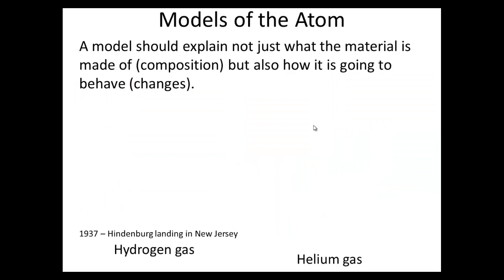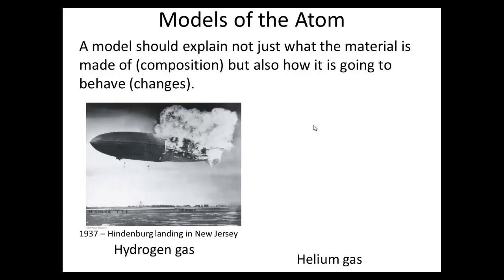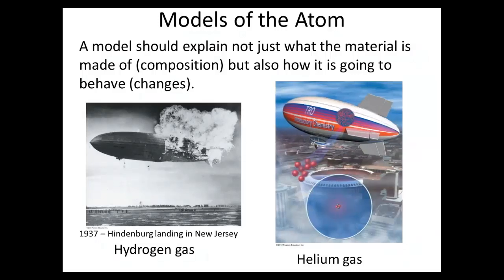So, now that we have the valence electrons out of the way, and you have a general understanding of it, I want you to kind of get an idea of what models of the atoms are. And we use models to explain not just what the material is made of, but also how it is going to behave, how it's going to change, basically how to predict how things are going to react. So, an example is hydrogen gas. They actually used this in 1937 for a blimp. It was a cross-Atlantic blimp ride. And as it was landing, it actually blew up. And this is just because hydrogen gas is really reactive.